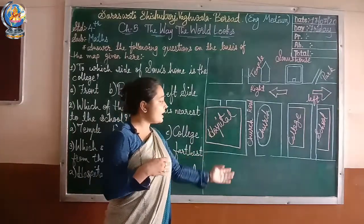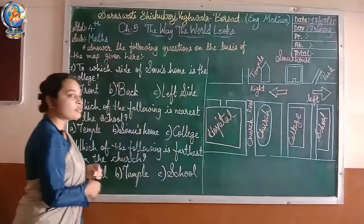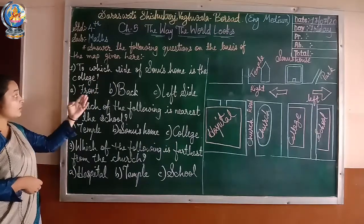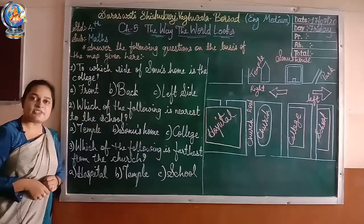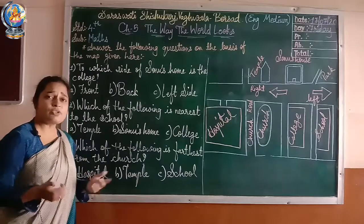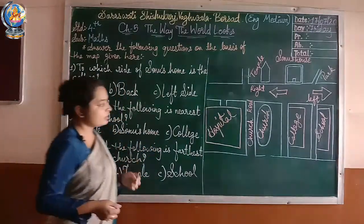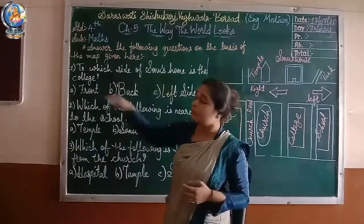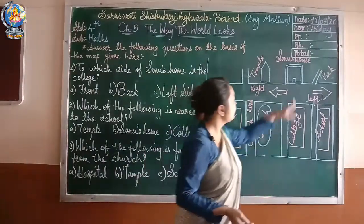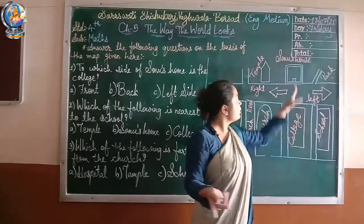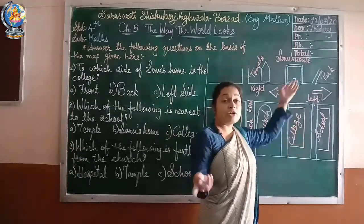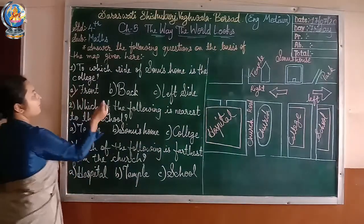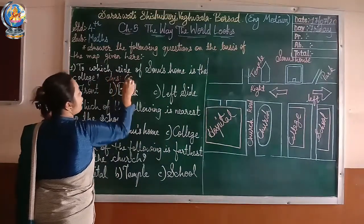The first question is: to which side of Sonu's home is the college? Options are A. Front, B. Back, C. Left side. College should be in the front of Sonu's home — Sonu's home is in front of the college, or the college is in front of Sonu's home. So the answer is option A.